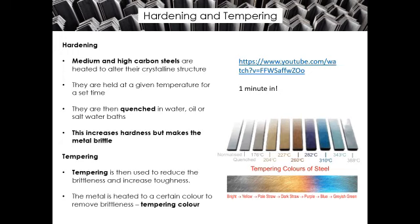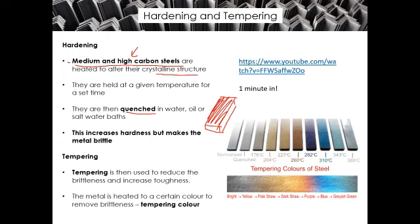Next, hardening and tempering, used on medium and high-carbon steels — steels that already have a higher carbon content than low-carbon steel. They are heated to alter their crystalline structure, held at a given temperature for a set time, then quenched — basically dunked in water, oil, or sometimes salt water. This creates a very, very hard surface on the outside. However, in contrast to low-carbon steel, this can make the metal quite brittle, meaning the whole thing could snap quite easily.